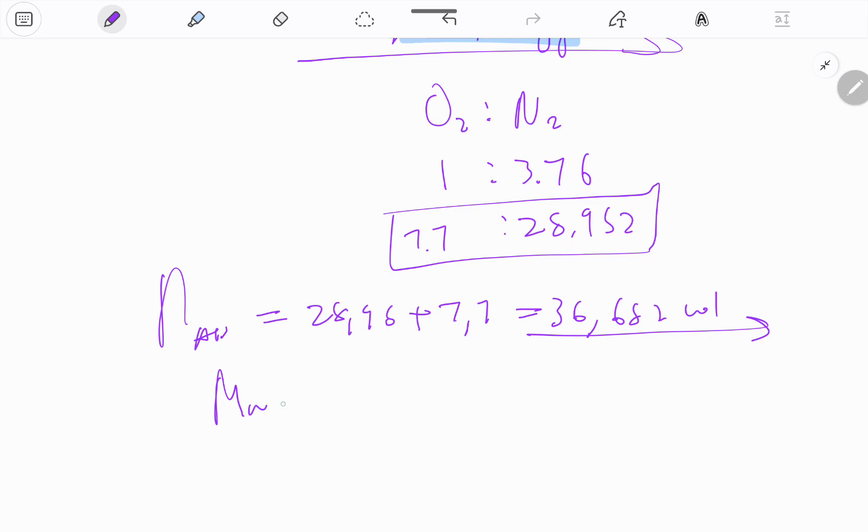Number of moles of air will be 28.95 plus 7.7, and that gives us 36.652 moles. These are the number of moles of air. If we know the number of moles, we can get the molar mass of air from the data table.